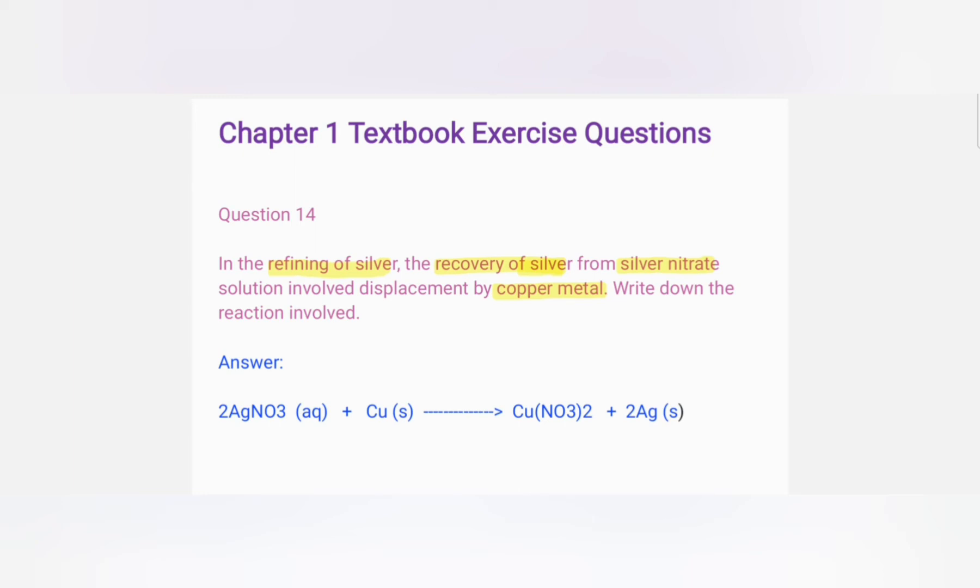So the reaction is copper metal. Copper is more reactive than silver, so here copper will replace silver in silver nitrate. This will form copper nitrate and it will separate silver.